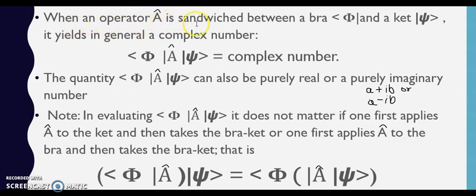When an operator A is sandwiched between a bra and a ket, matlab ye bra aur ye ket ke beech mein agar hum ek operator ko rakhte hain, it yields in a general complex number. Agar isko hum aise rakhte hain, A operator ko is dono ke beech mein rakhte hain toh woh humein ek complex number deta hai.